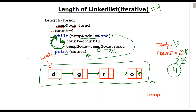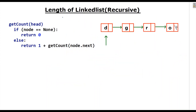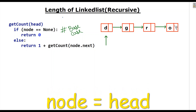Now let us see how we can calculate this recursively. For calculating recursively, first we should have a base case: if node is equal to None, it should return 0. So let us start. This is the head of the linked list. It will check whether the node is equal to None, but node is D there, so it will go to the else part.